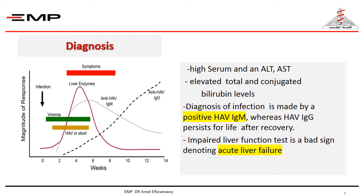Diagnosis of infection is made by positive HAV IgM, whereas HAV IgG persists for life after recovery, indicating immunity. Impaired liver function test is a bad sign denoting acute liver failure.